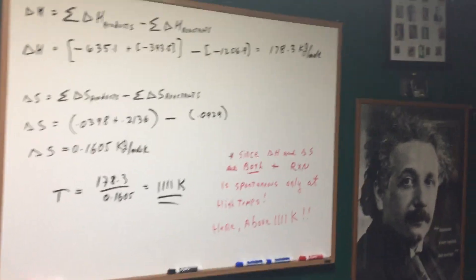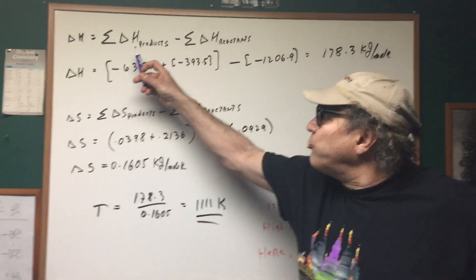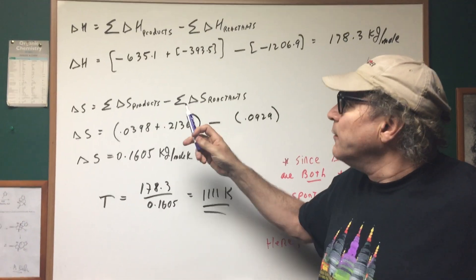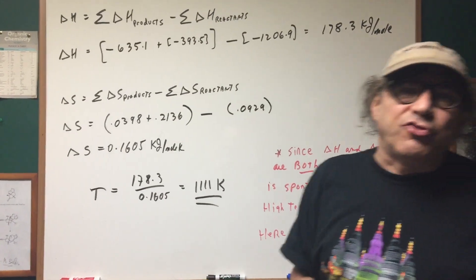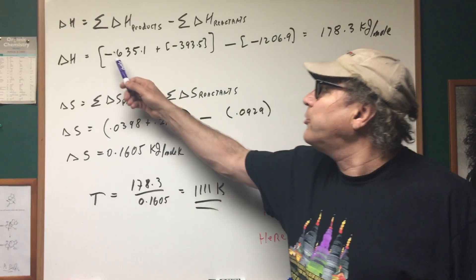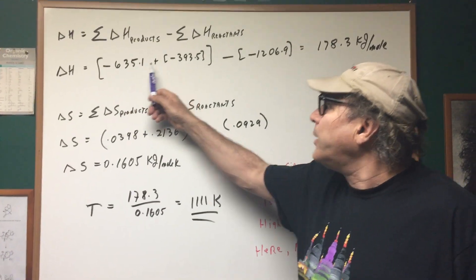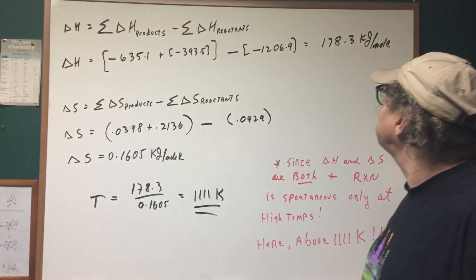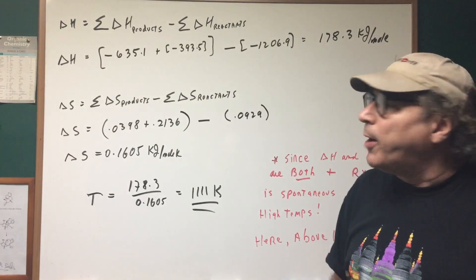The Delta H we're going to have to work for. Delta H is equal to the sum of the products minus the sum of the reactants. For the DAT, the numbers will be much nicer. So just relax and watch how I do it. You're going to take the products minus the reactants. And when you plug it in, you get 178.3 kilojoules per mole.